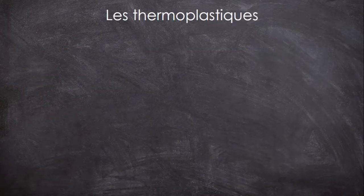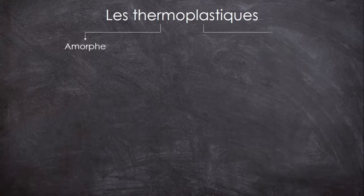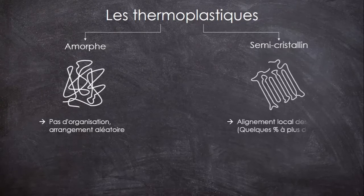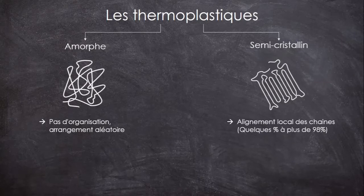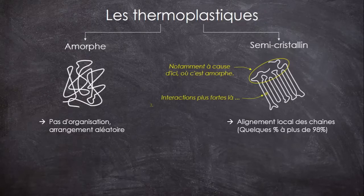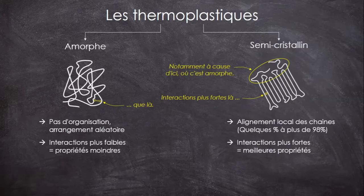Selon le polymère et sa configuration, un thermoplastique va être amorphe ou bien semi-cristallin. Dans le premier cas, les chaînes ne sont pas organisées et occupent aléatoirement l'espace. Dans le second, une partie des chaînes s'alignent localement. On dit semi-cristallin parce qu'en fait c'est impossible d'avoir 100% de cristallinité dans un polymère. Cela a une conséquence sur les propriétés des thermoplastiques, puisque dans les régions cristallines les chaînes sont très rapprochées, ce qui augmente l'intensité des interactions et donc la cohésion du matériau. Les semi-cristallins disposent généralement d'une rigidité, d'une tenue en température et d'une résistance au solvant un peu meilleure que celle de leurs homologues amorphes.